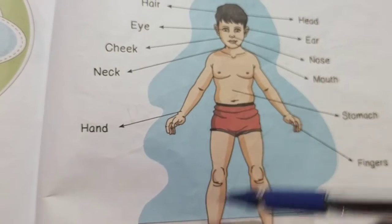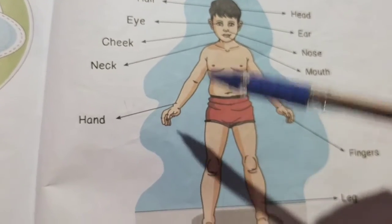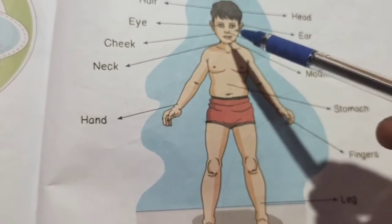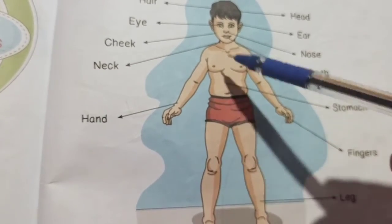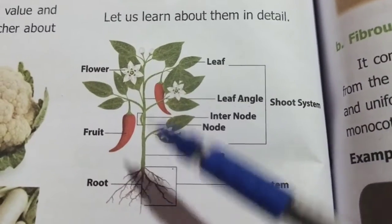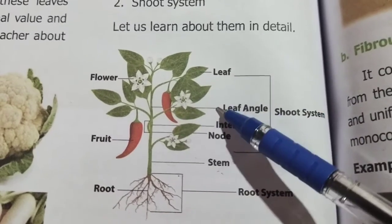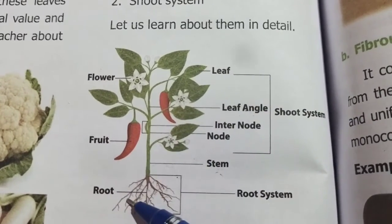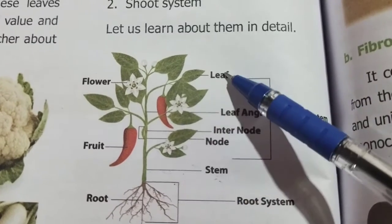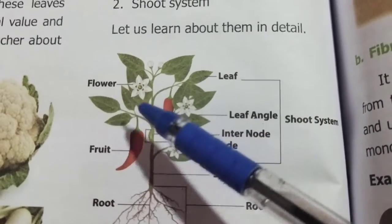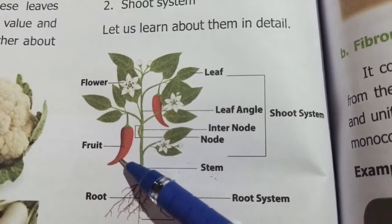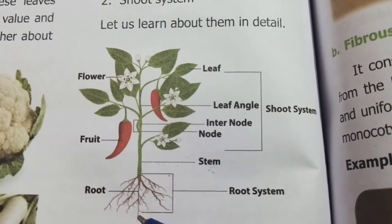Students, now look at this picture. This is a picture of human body. The human body is made up of many organs. Similarly, the body of plants is also made up of many organs. The body of plants consist of root, stem, leaf, flower, fruit and branches. So now let us discuss one by one.